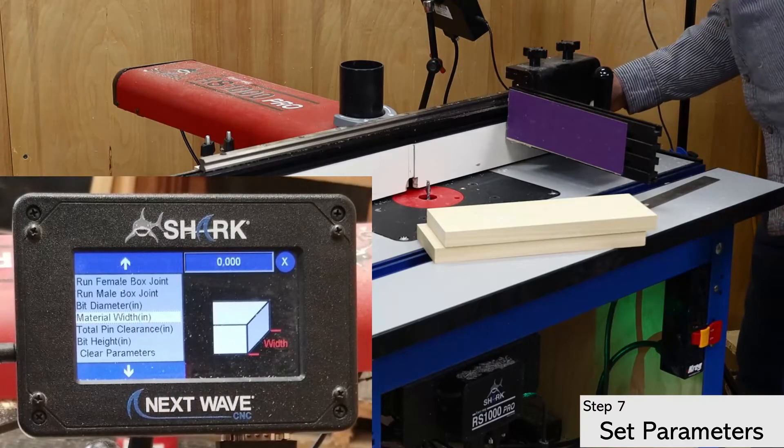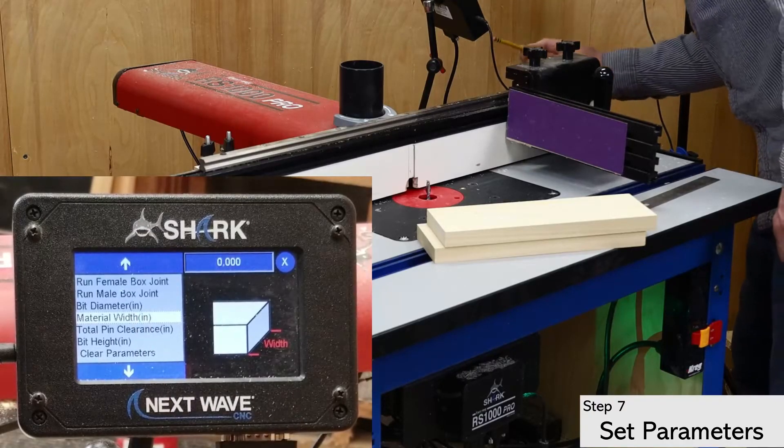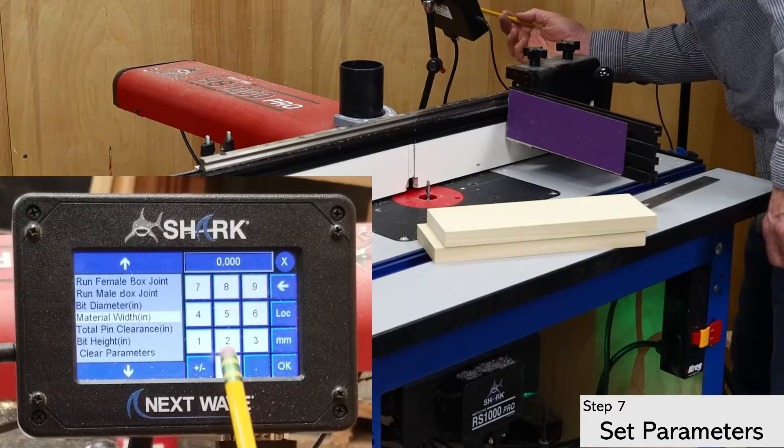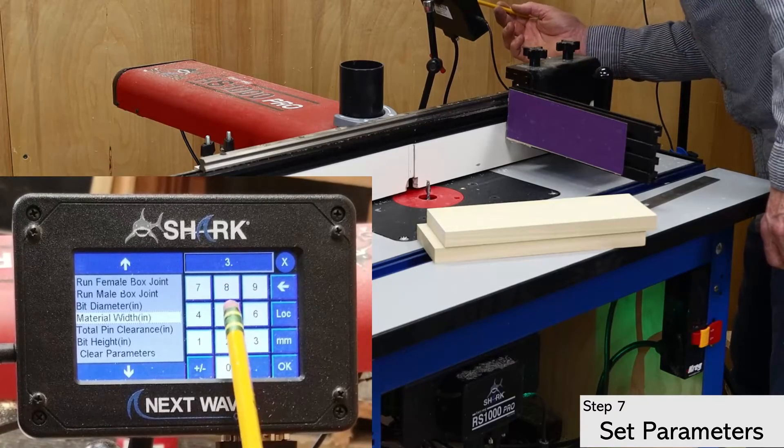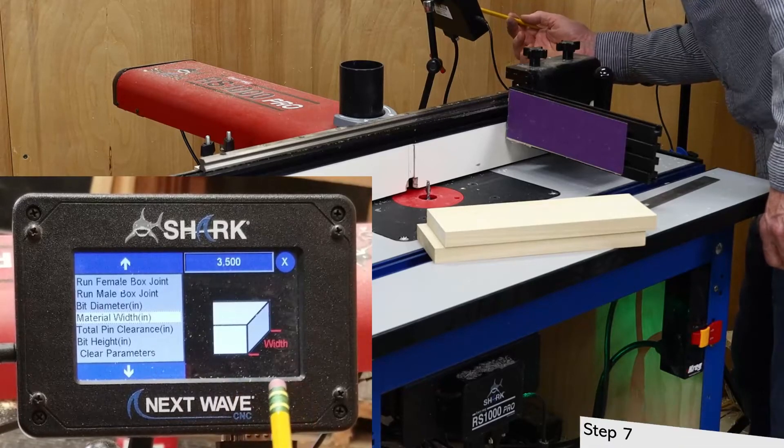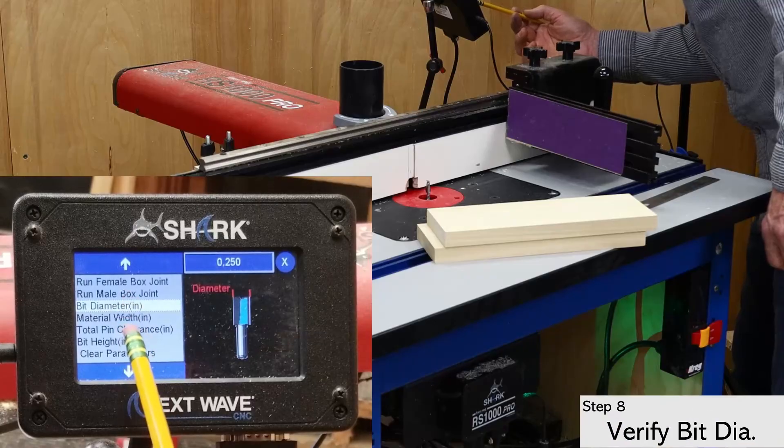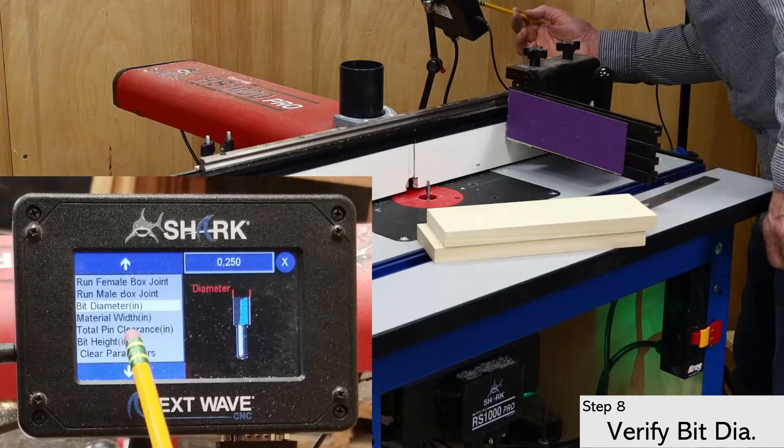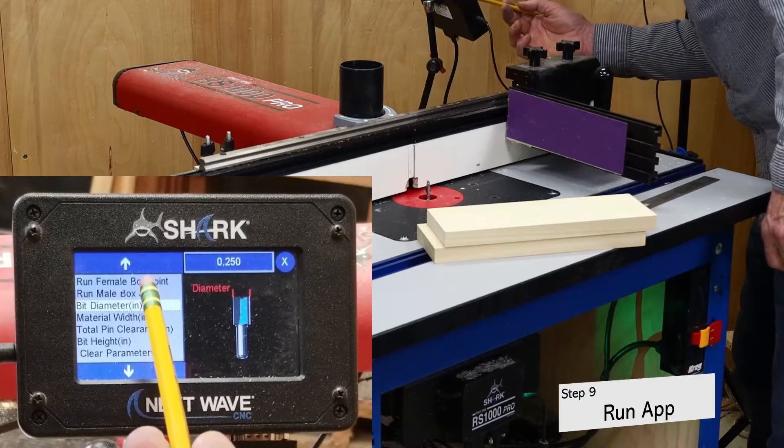Next up is the material width, which is 3.5 in this case. Even though the bit diameter carries through from what I entered earlier, I always double check it here to make sure I entered it correctly. I'm now ready to run the parts.